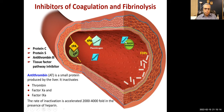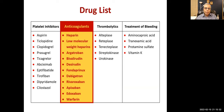There is a plasmin activator inhibitor as well — it shows there is a complex mechanism controlling coagulation, inhibition of coagulation, and fibrinolysis. Everything is very intricately controlled. Here is our drug list for the anticoagulants we are going to cover — it is a long list which is why this lecture is lengthy.